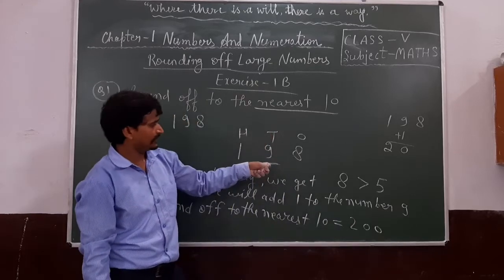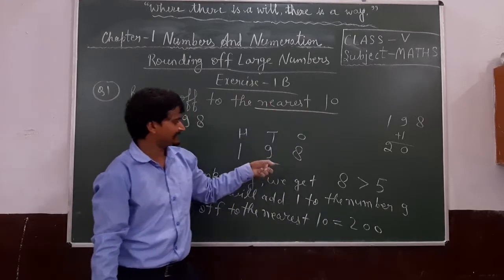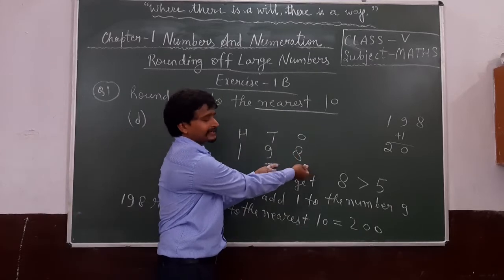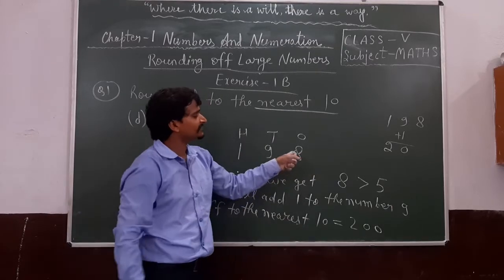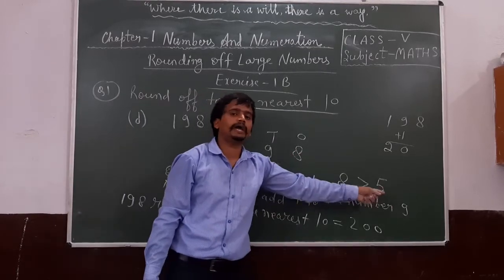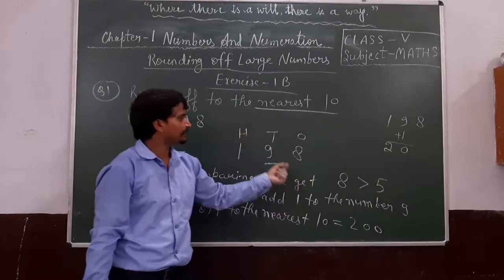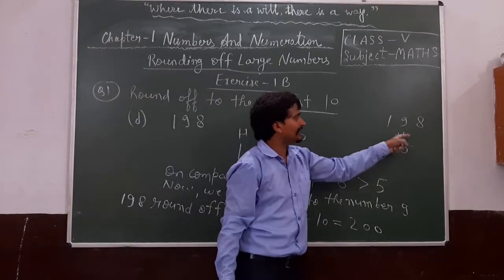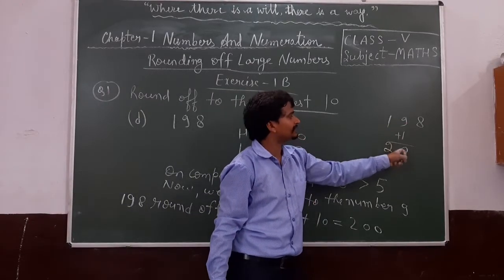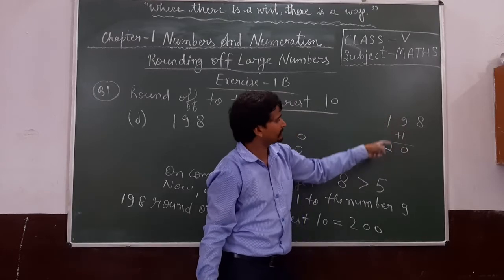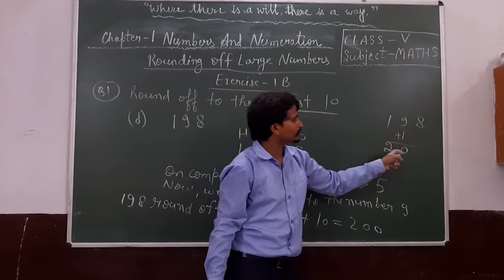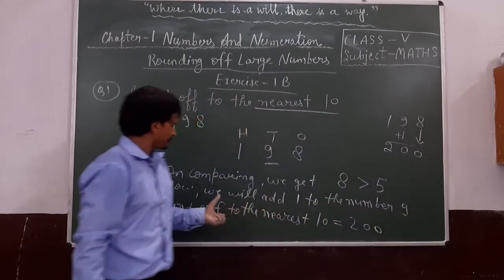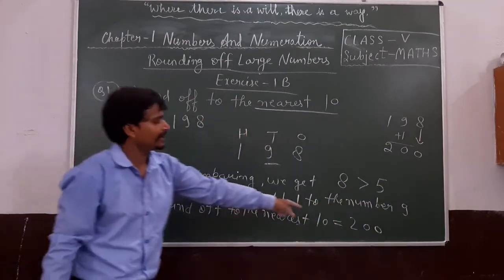To recap: we underline the tens place digit. Observe the digit at the right side of it. Since 8 is greater than 5, we add 1 to the underlined digit. 9 plus 1 equals 10, so 0 carries 1 forward, making the hundreds digit 2, and the units digit becomes 0. So the answer is 200.